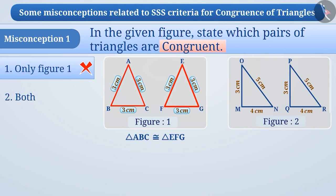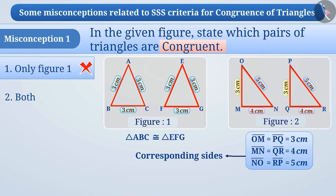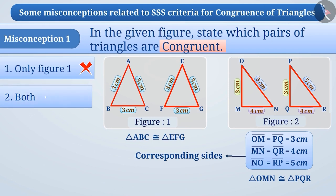In the second figure, OM equals PQ equals 3 cm, MN equals QR equals 4 cm, and NO equals RP equals 5 cm. Hence, all three corresponding sides of triangle OMN and triangle PQR are also equal. Therefore, both triangles shown in figure 2 are also congruent. Triangle OMN is congruent to triangle PQR. The correct answer is option 2.